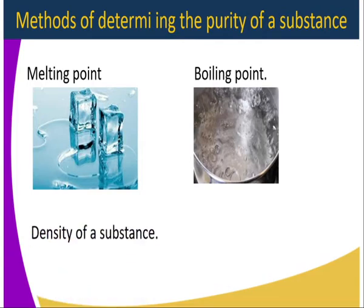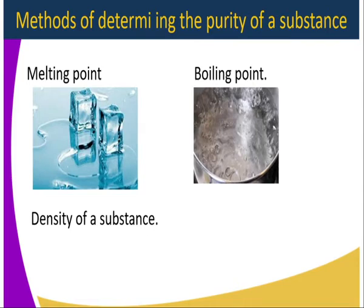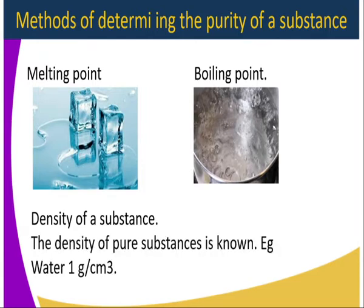We also have density of a substance, which can be used to determine whether that substance is pure or impure. For instance, the density of water is one gram per centimeter cube — that is a constant. Therefore, if the density of a water sample is determined and it is not one gram per centimeter cube, that means the water is not pure. In this lesson, we will focus on boiling point and melting point.